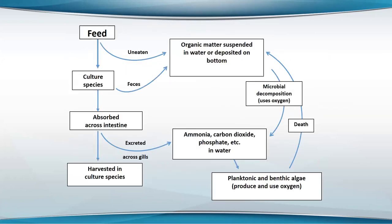The feed goes in and part of it is not eaten. That uneaten part is much larger for shrimp than it is for fish. Fish — virtually all the feed if it's fed properly will be consumed. With shrimp, probably anywhere from 10 to 20 percent of the feed just ends up entering the water and never being eaten. The part that's actually absorbed by the culture species — part of it is excreted by the species, that's probably another 10 or 20 percent.